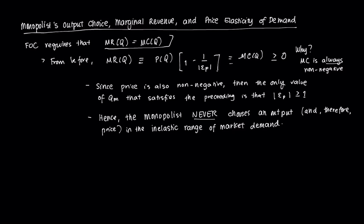And from before, we derived a form of marginal revenue which can be expressed as P(Q) times 1 minus 1 over the elasticity of price, which is essentially appealing to this FOC equal to our marginal cost.